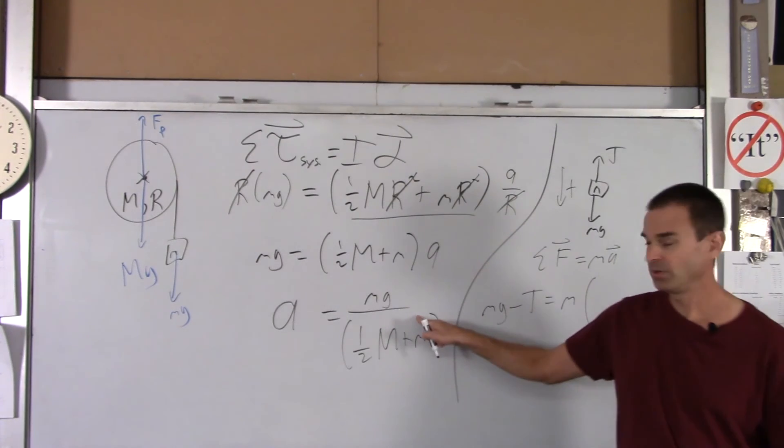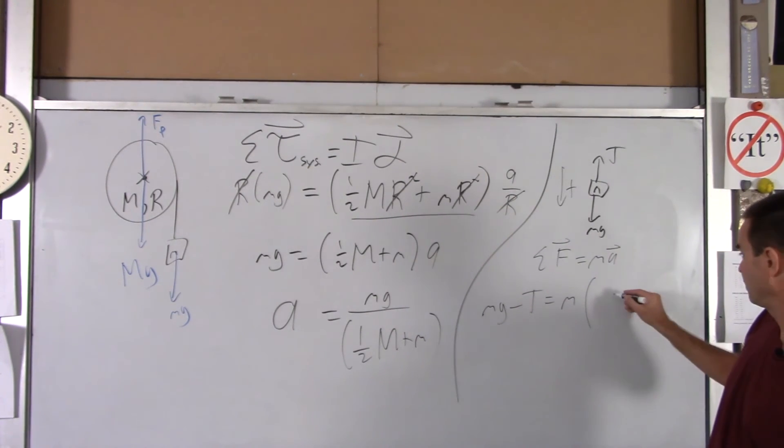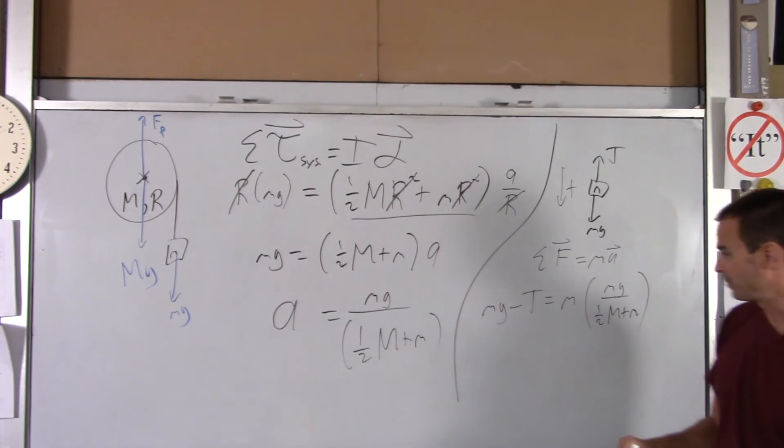So if we do net force equals ma, we got mg minus tension equals ma. And A, we know it's that. So I'll put that in here. We got little mg over one-half big M plus little m.